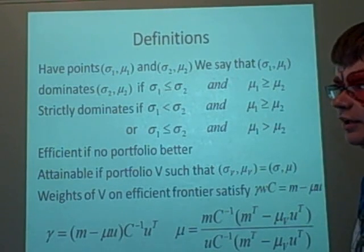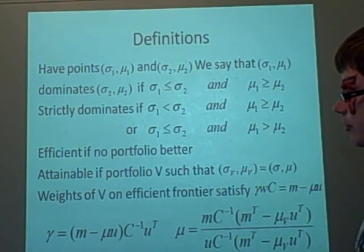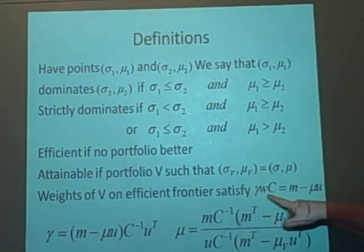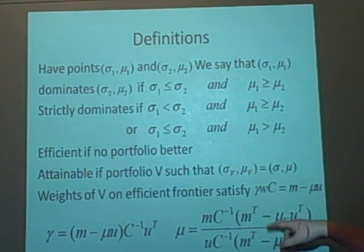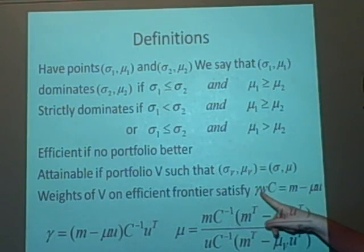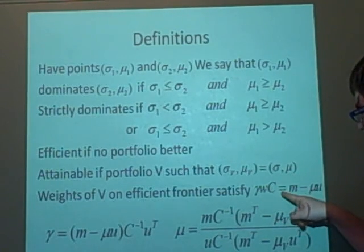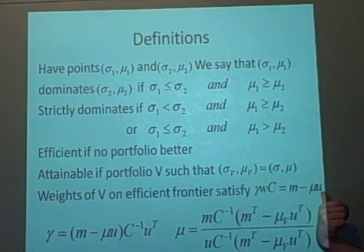Right, now that we know dominates or strictly dominates, the weights of how much we're going to distribute, that's defined here. So it has to satisfy this equation, which is gamma times w, so we've got the gamma and the mu here, gamma times the weights vector times the covariance matrix,